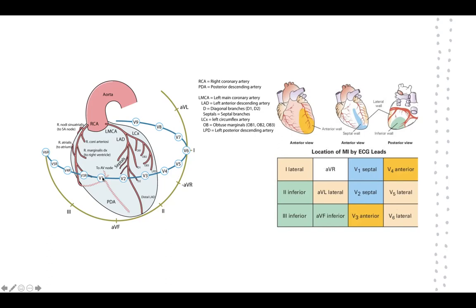For example, V1 and V2 correspond to the septal wall. Leads two, three, and AVF look at the bottom — the inferior wall of the heart. Once we identify the area of the heart affected, we can correlate it with the artery likely involved in that section.